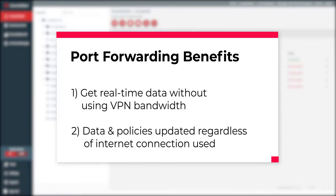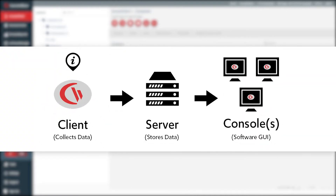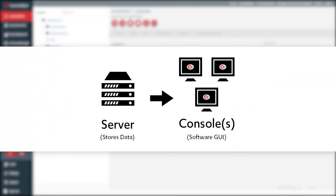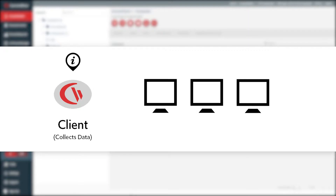As a bonus, with port forwarding, your employees' computer activity data and security policies are kept up to date no matter what internet connection they use. To begin, Mike will show you how to install the CurrentWare console and server. Later in this tutorial, we will install the CurrentWare client on your remote employee's computer and use port forwarding rules to connect them to this server.